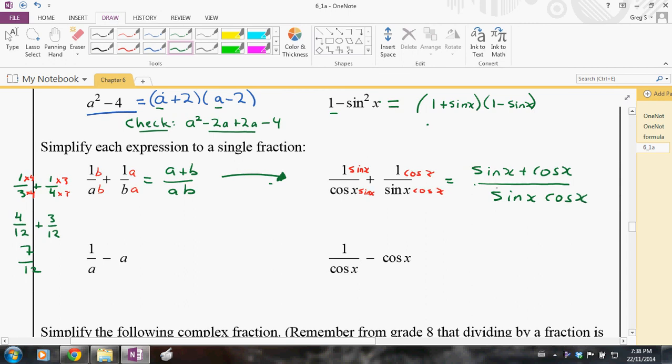All right, so moving on to the next question. I've got 1 over a minus a. So here's a fraction with a denominator of a. And here this is just a whole number. We can think of this as a over 1. So if I'm going to multiply this so that I have a common denominator of a, then I have to multiply the top times a and the bottom times a. All right, so what am I going to get? I'll just rewrite this statement here. I'll get 1 over a minus a squared over a. And then when I combine those, I'll get 1 minus a squared all over a.